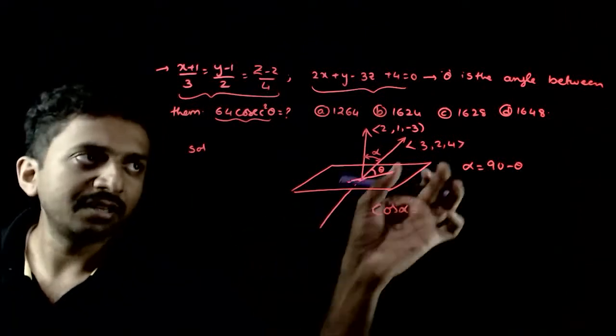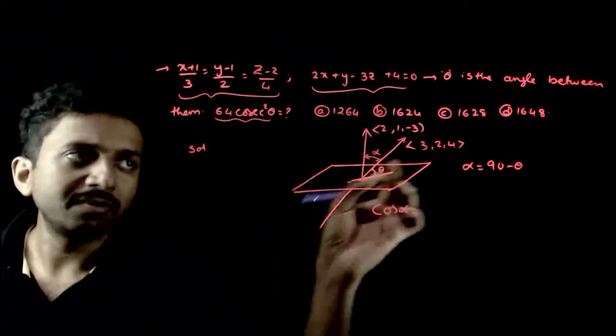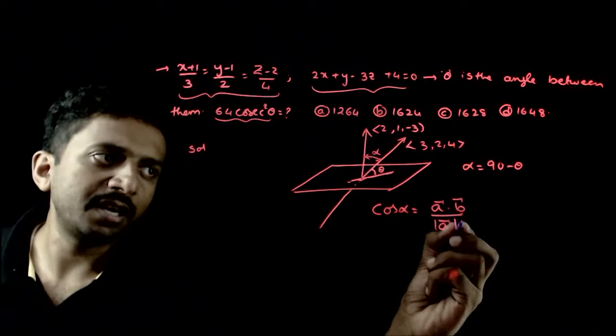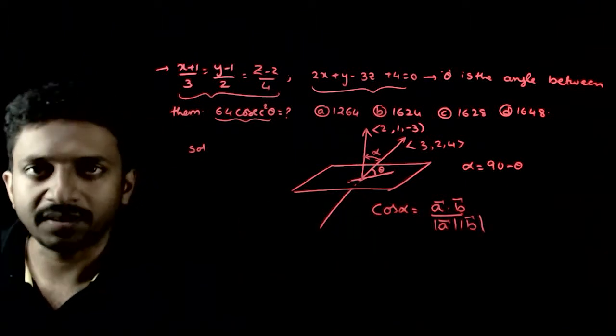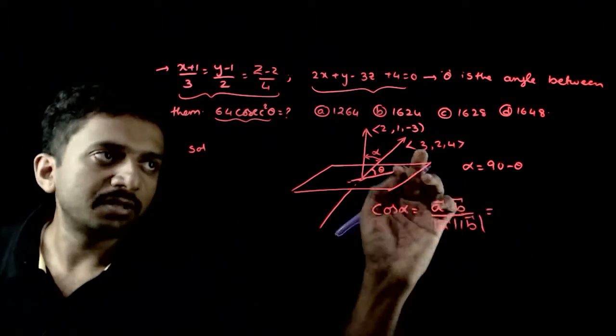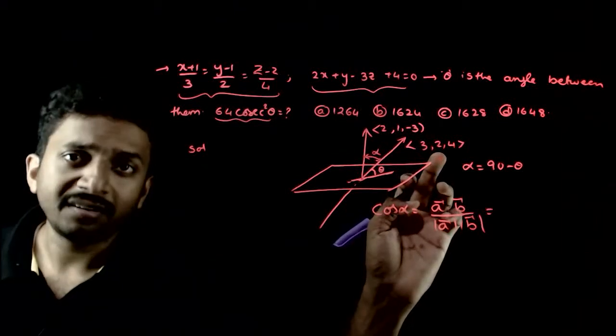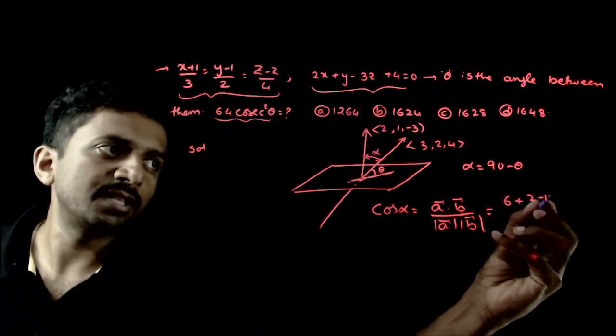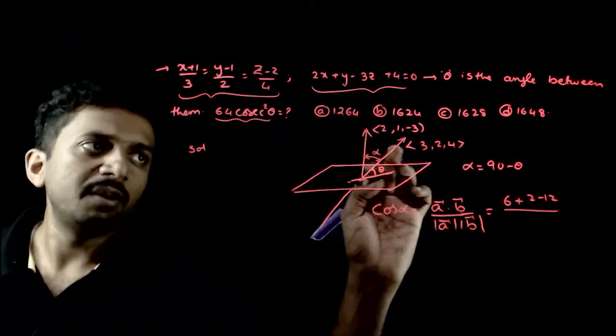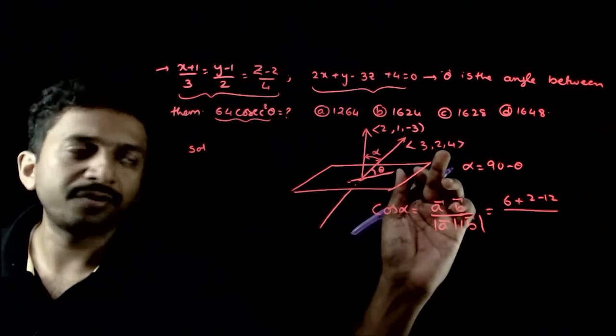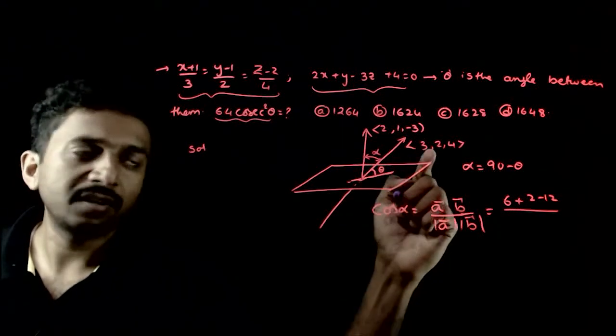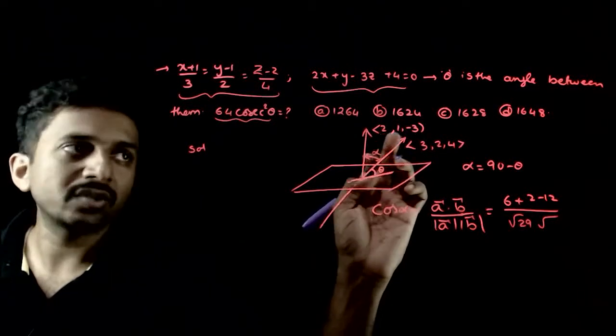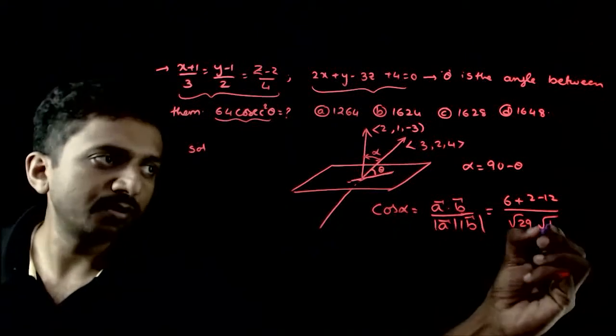Mujhe cos alpha baat easy li hai. Cos alpha is nothing but the dot product of these two divided by the magnitudes of these two. Something like a bar dot b bar by mod a bar into mod b bar. That is equal to dot product 6 plus 2 minus 12 divided by modulus of a is root of 3 square plus 4 square plus 2 square. That is root of 29 into root of 3 square plus 2 square plus 1 square root of 14.